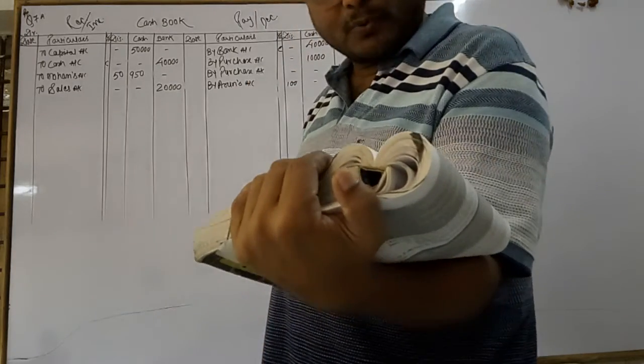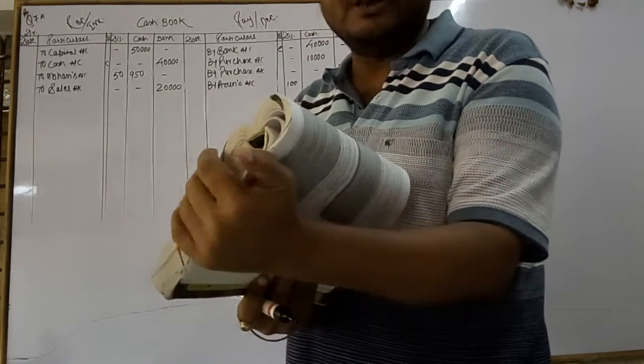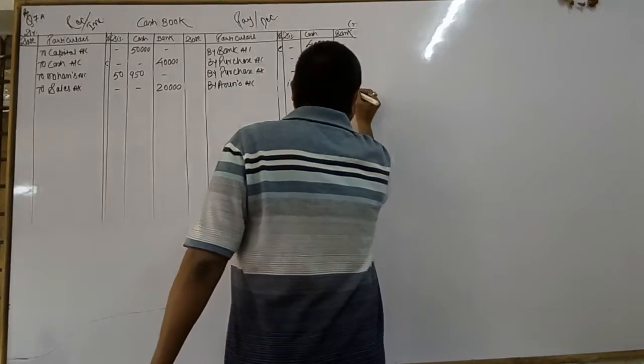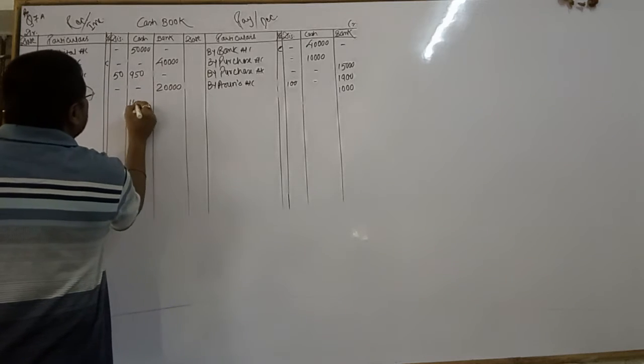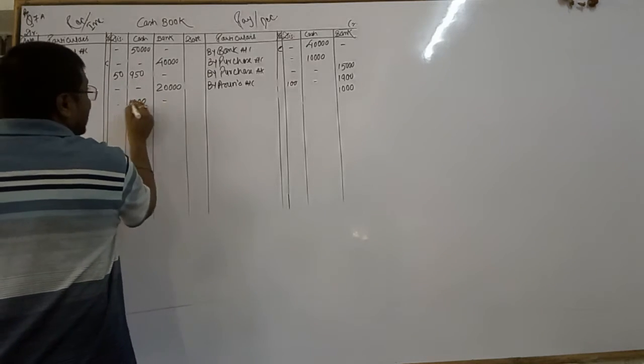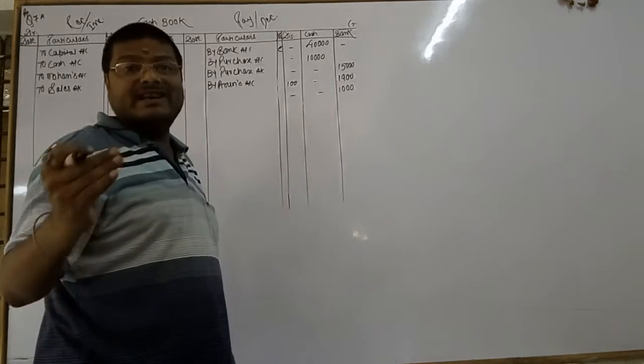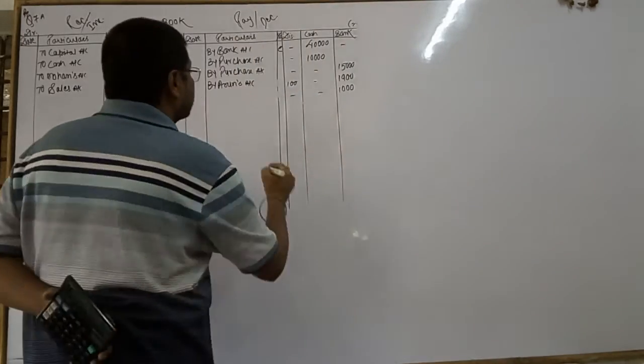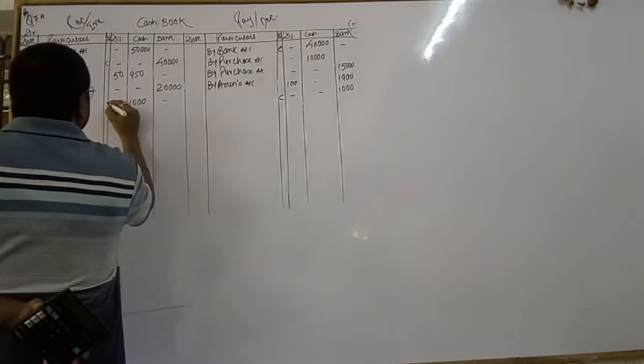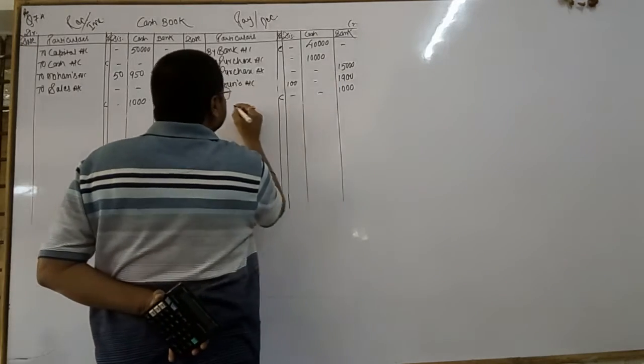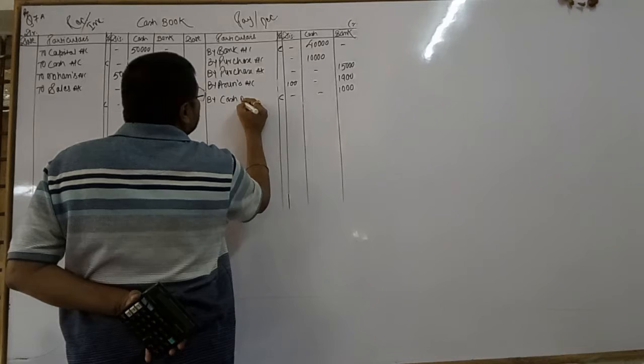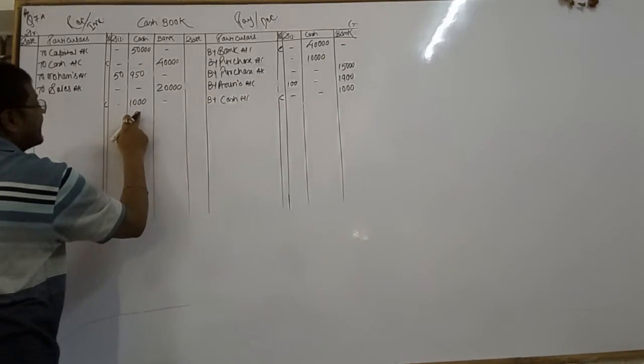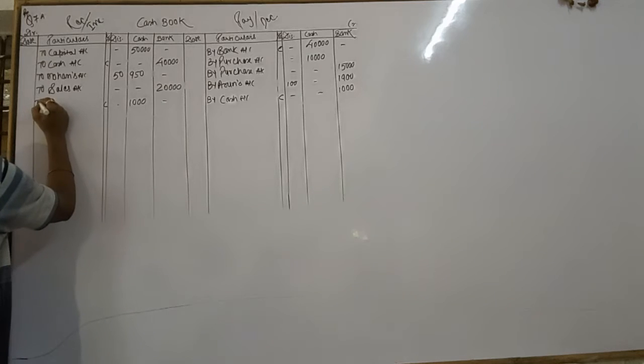Next, drew from bank for office use rupees 1,000. Bank se 1,000 rupees withdraw liya. Result, bank ka balance decrease gaya, cash ka balance increase gaya. When the transactions are recorded on the both side of cash book, are known as contra entry. Bank main likhun ga by cash. Cash kaun sa column hai? Cash, to main likhun ga bank.